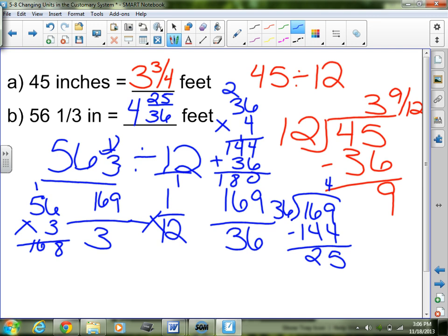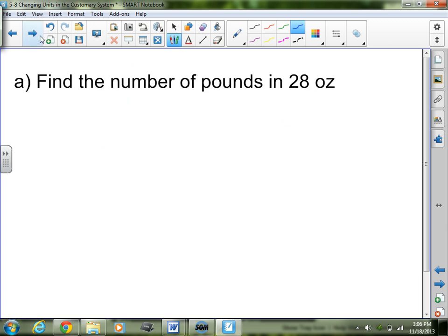Not too complicated there. It's just a lot of steps. That's why I show all of my work. So find the number of pounds in 28 ounces. This is where it gets a little trickier because I have to remember how many ounces are in one pound. So I'm going to set myself up here. I have 28 ounces equals some number of pounds. I'm going from a small unit to a bigger unit. So that means I'm going to divide.